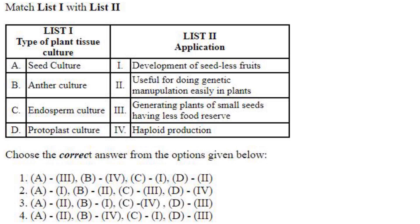Match the following — type of plant tissue culture and application. Seed culture: generating plants of small seeds having less food reserve, A3. Anther culture: haploid production, B4. Endosperm culture: development of seedless fruit, C1. Protoplast culture: used for genetic manipulation in plants, D2. So the answer is option 1: A3, B4, C1 and D2.